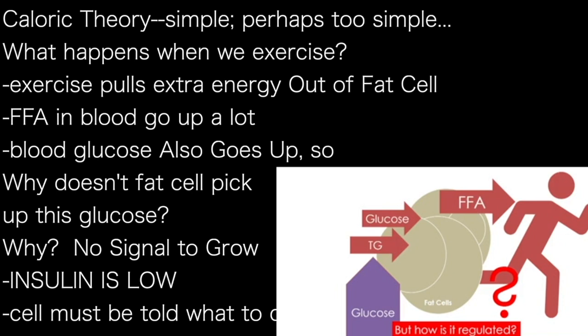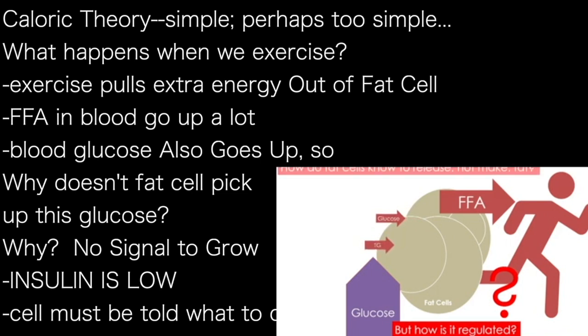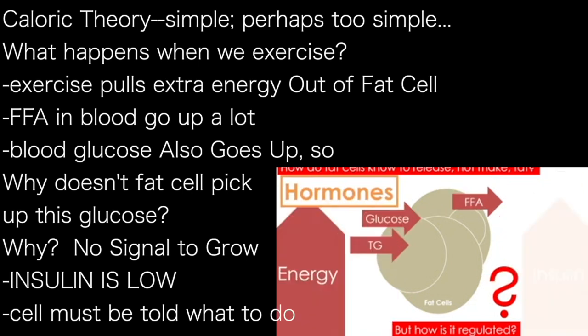The fat cell loves taking in glucose to store for energy. But that's because even though there is plenty of energy in the blood, and indeed the fat cell is contributing to it, the fat cell knows that it's time to release fat rather than store it because of hormones — specifically insulin. It is the hormone that tells a cell what to do with the energy that it has.